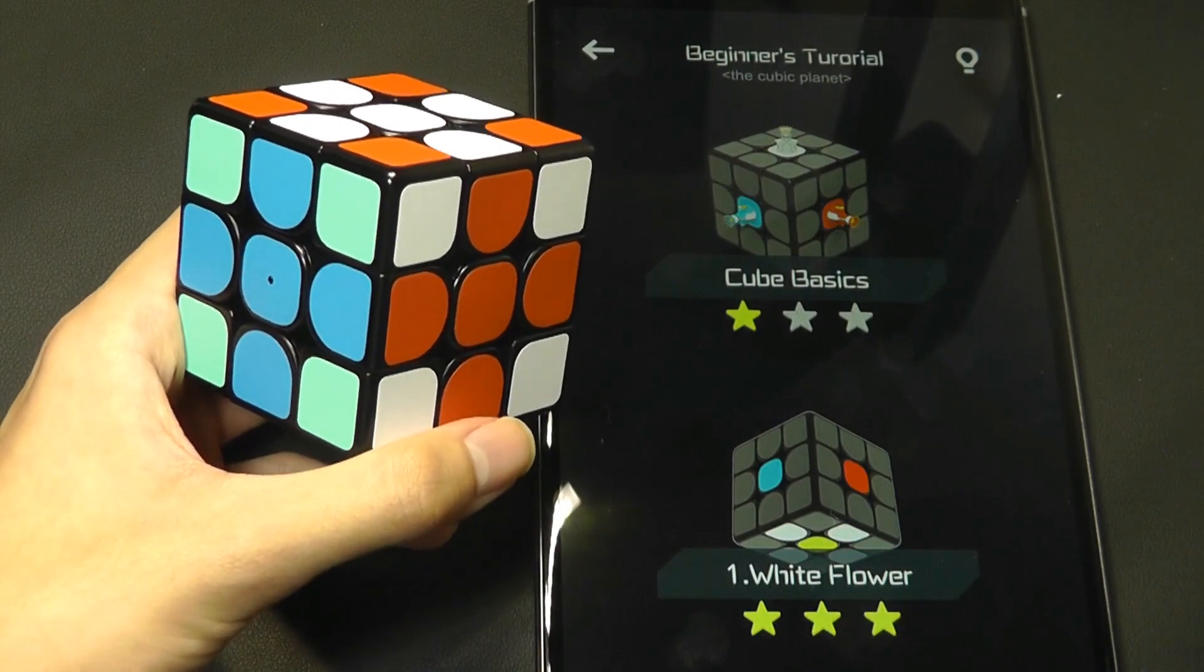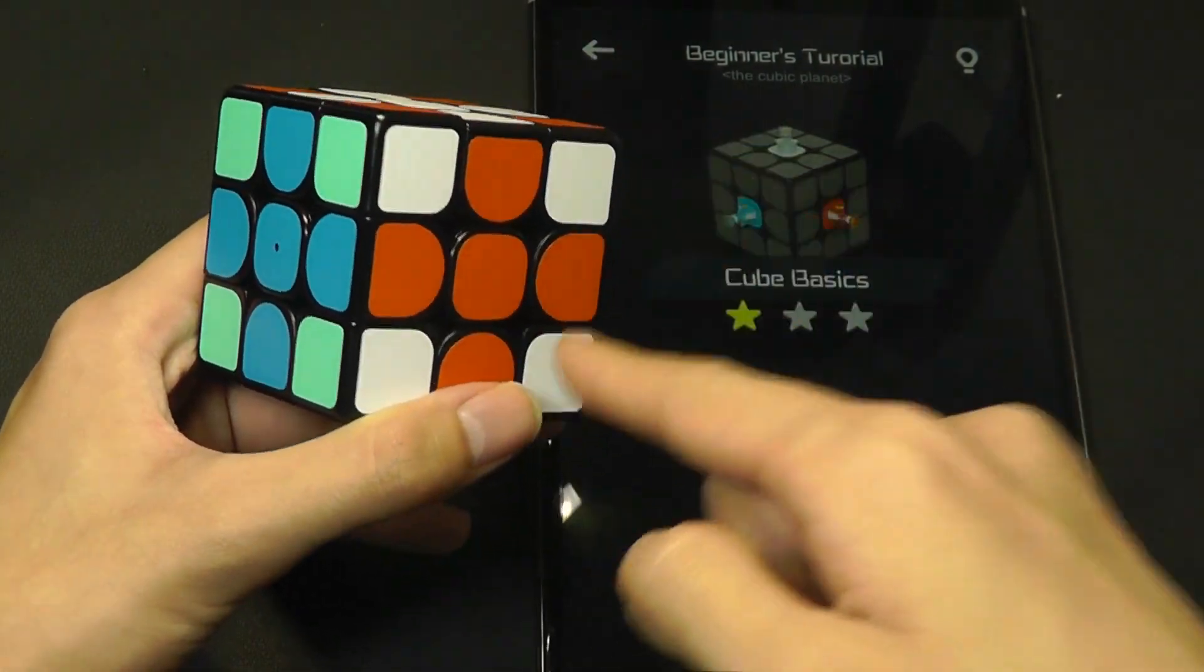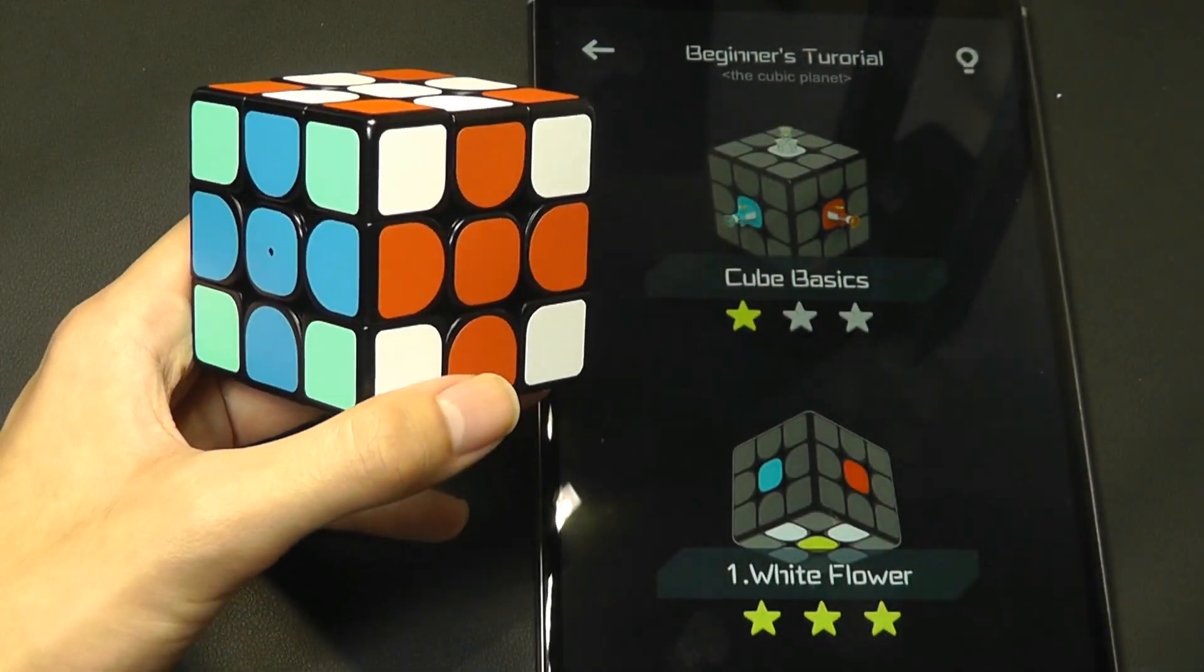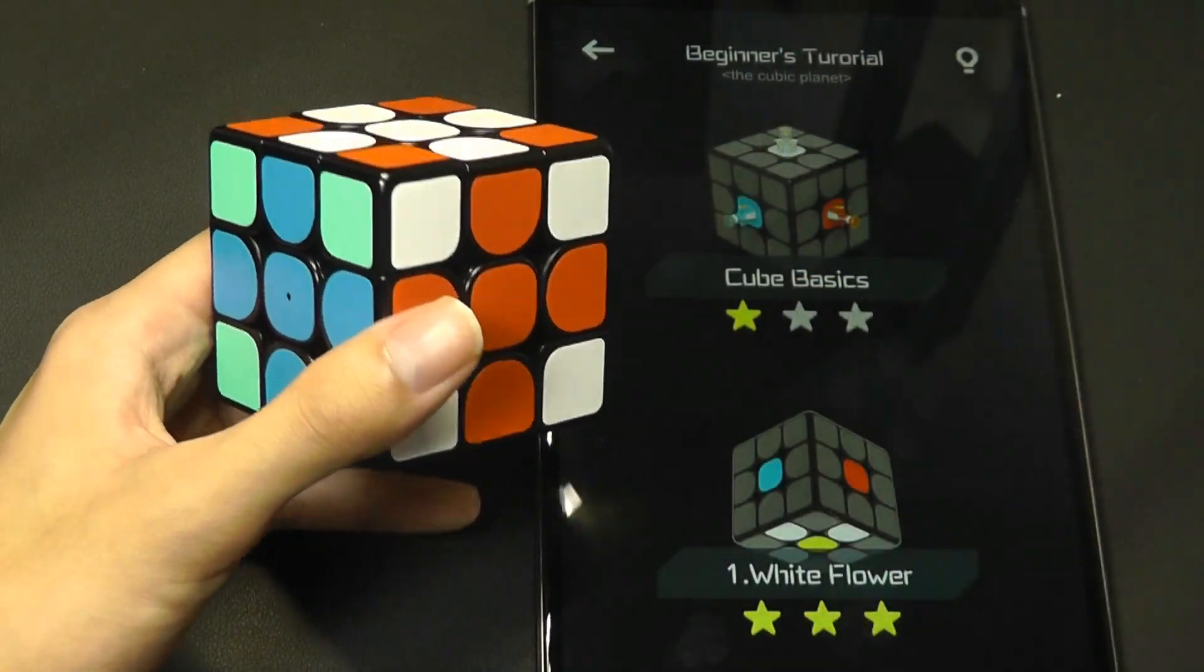It will tell you a story of how there's six kingdoms, which are the six faces, where the king's positions are and the corner positions. And it's also going to teach you the orientation, such as up, down, and the three different layers.